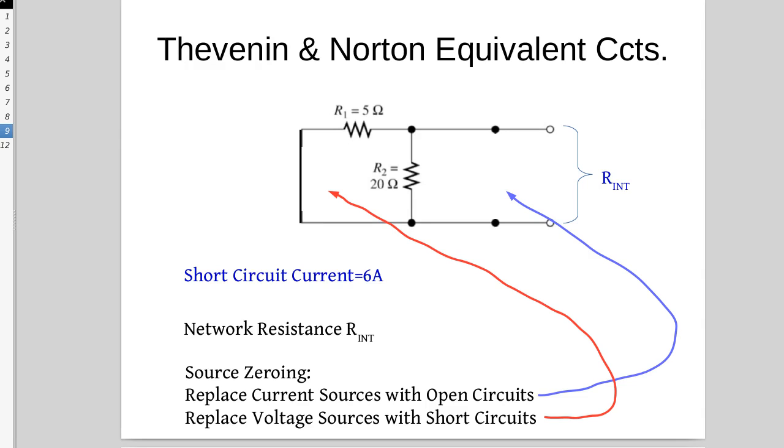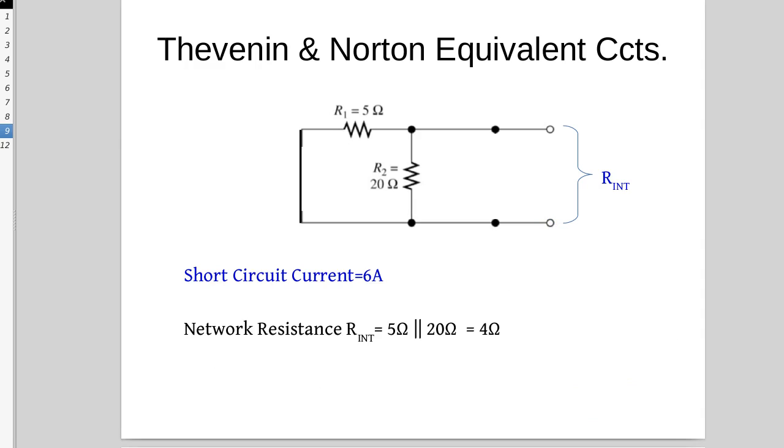Then you realize straight away that the 5 and the 20 are in parallel, giving us a total of 4 ohms, and that's our network resistance.